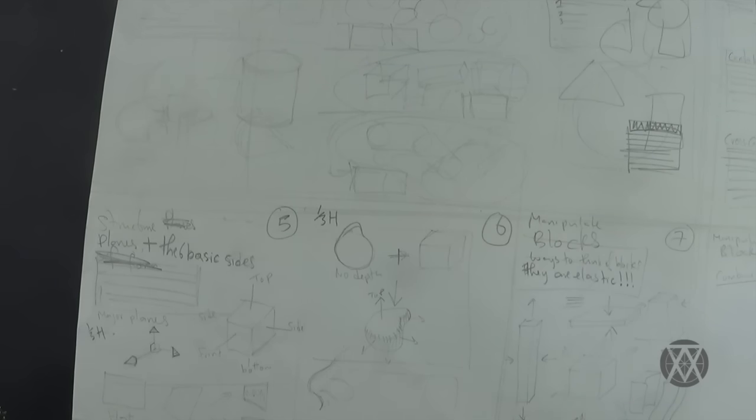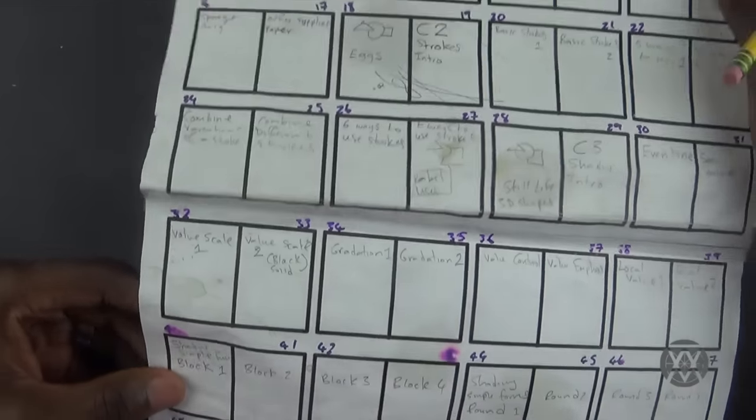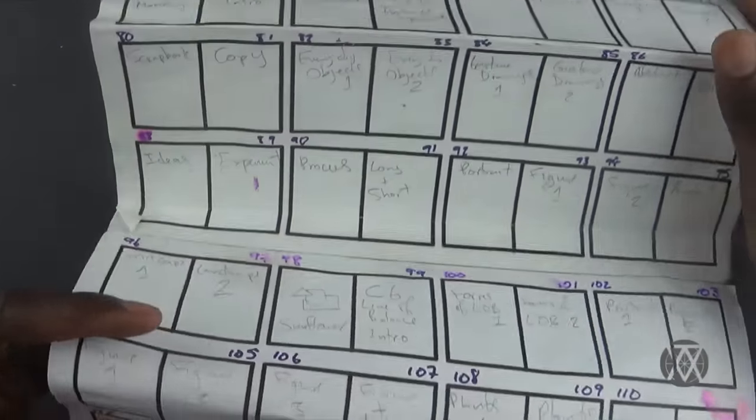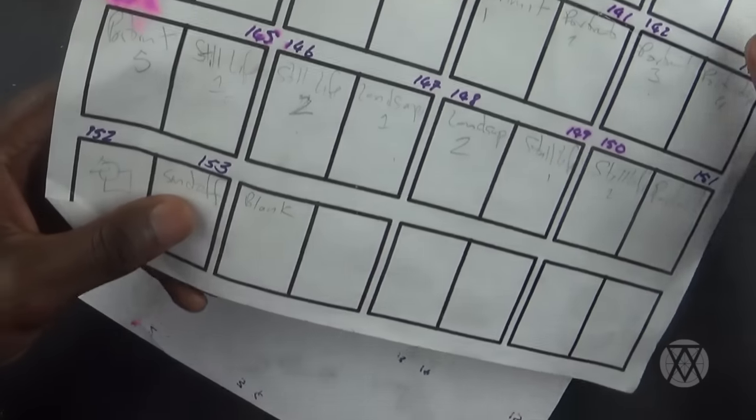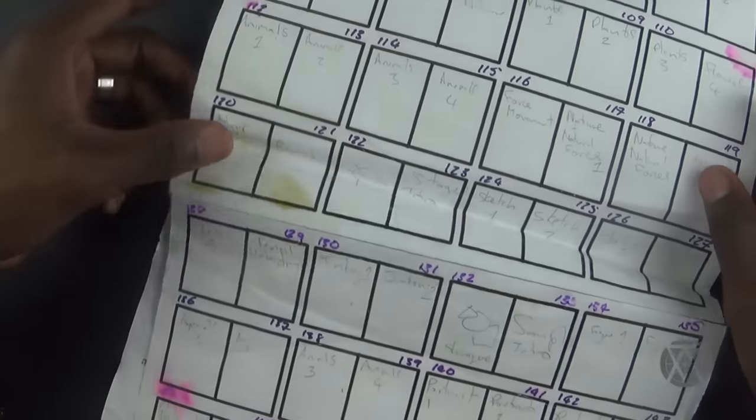And then I start making a layout like a storyboard. This is basically how I laid out every single page of the book. See, initially it was 153 pages, but it actually turned out to be 166 pages.